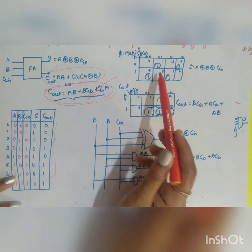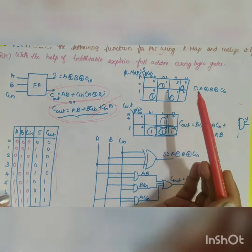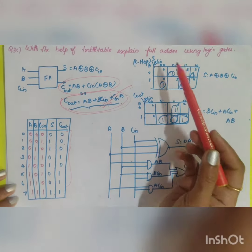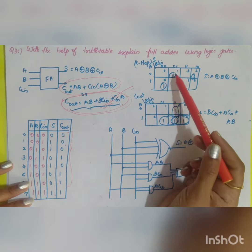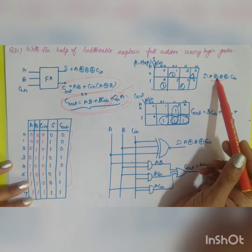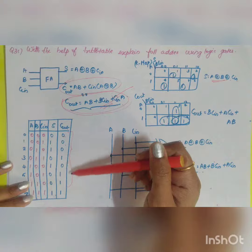So here you have your sum is equal to 1, 1, 1, 1. So you have A XOR B XOR Cin, or you can go with your simplification. So expression can be obtained by your K-map.